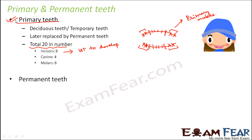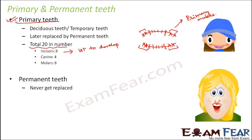Around age eight to ten, the primary teeth get replaced by permanent teeth. Once the permanent teeth come in, they are never replaced — if a tooth gets broken, it will not grow back. The permanent set of teeth needs to be taken good care of, because losing them early causes problems. Permanent teeth are 32 in total — 12 more than the primary set.